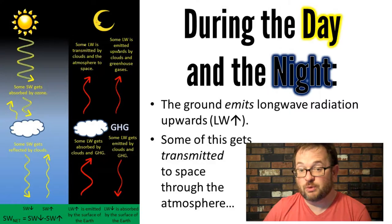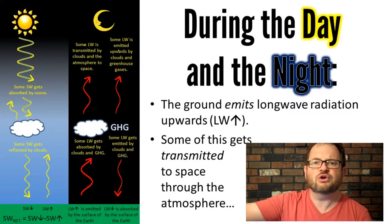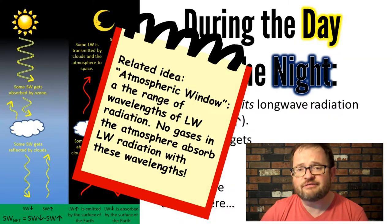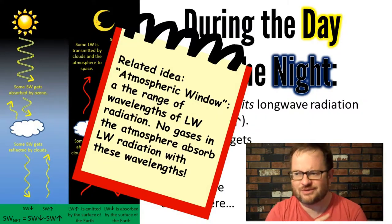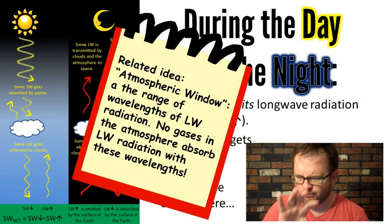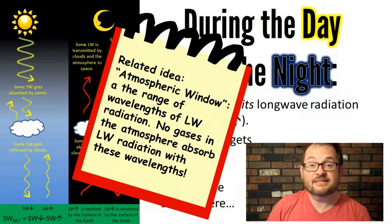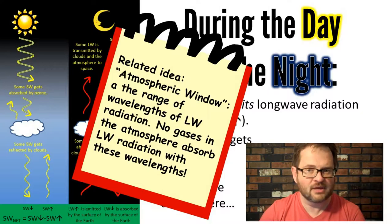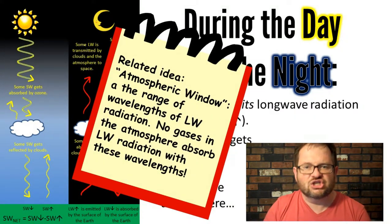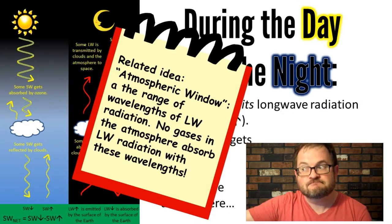That longwave radiation is energy we are losing at the surface — emitting radiation lowers the temperature of the Earth. Some of it does make it to space if it's at wavelengths we call the atmospheric window. The atmospheric window is not a place — it's a range of wavelengths where nothing in the Earth's atmosphere — not nitrogen, oxygen, ozone, carbon dioxide, or water vapor — is good at absorbing. So photons at those wavelengths are simply transmitted through the atmosphere out to space. That's heat that's just lost.